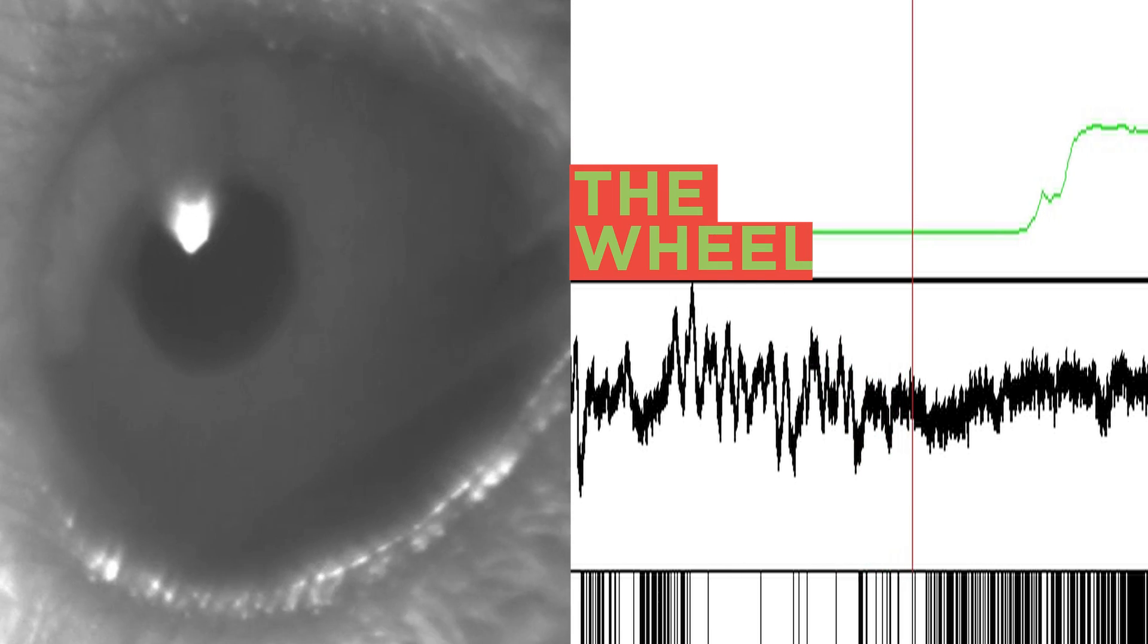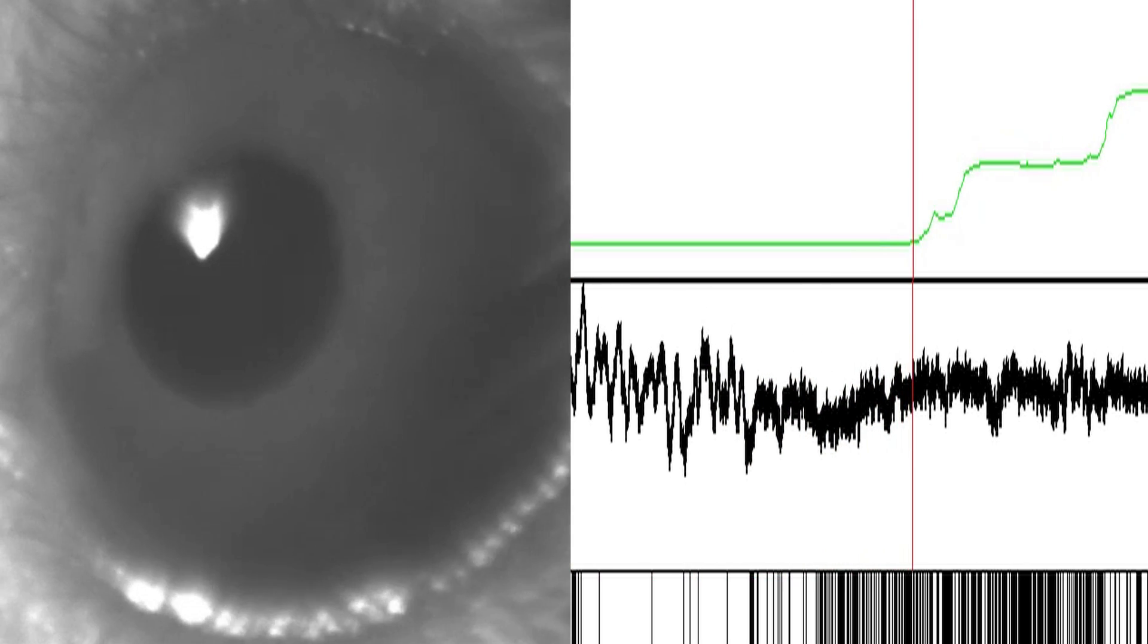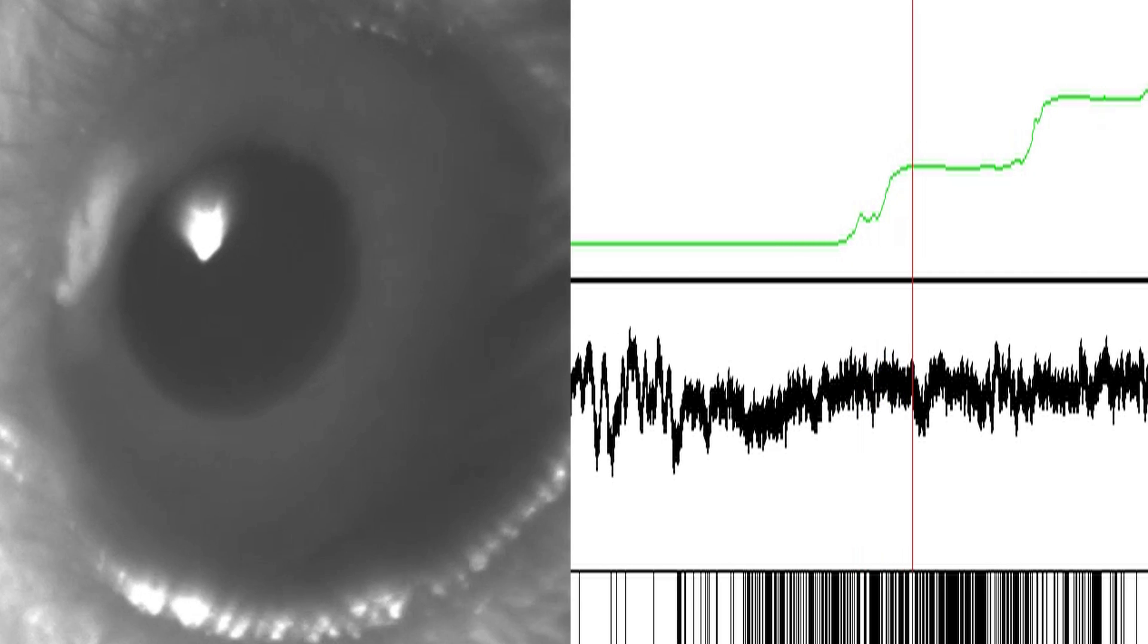When the mouse starts moving, cells become more active and the pupil is dilated. You also see that the local field potential gets flat.